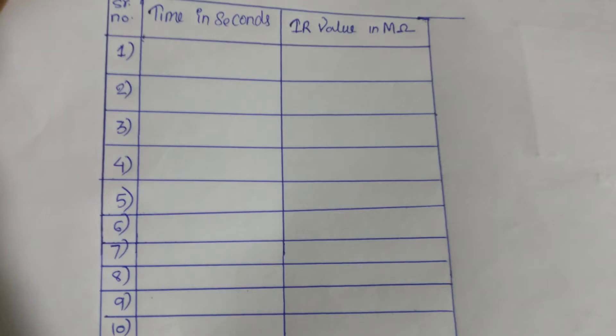The observation table has columns for time in seconds and the IR value. It is a hand-driven generator. We will record the value at 15 seconds, 30 seconds, 60 seconds, and 120 seconds, that is two minutes. From the values we obtain, we can plot the graph for the time absorption test and also determine the polarization index.